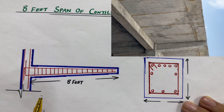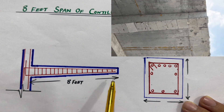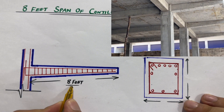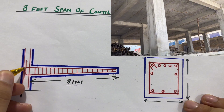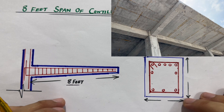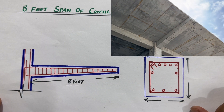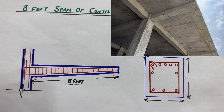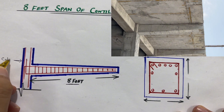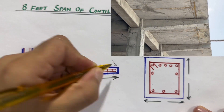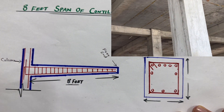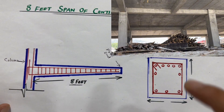From the construction side, you can see here this is its long section and this is the cross section for a cantilever beam which length is eight feet. This is the free end and we don't have any support here. This is the fixed support, therefore this is a cantilever beam. If you are new on this channel, please subscribe and like the video.